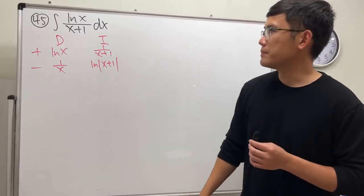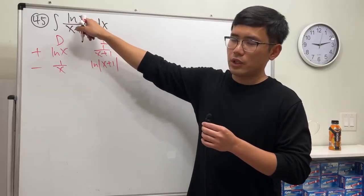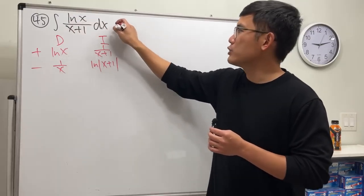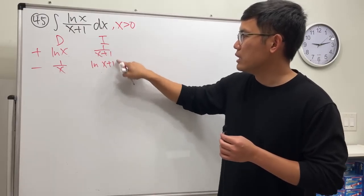Now, here's the thing. Because originally you have ln(x) already, that means x should be greater than 1—I mean, x should be greater than 0. So that means this right here we don't need the absolute value.